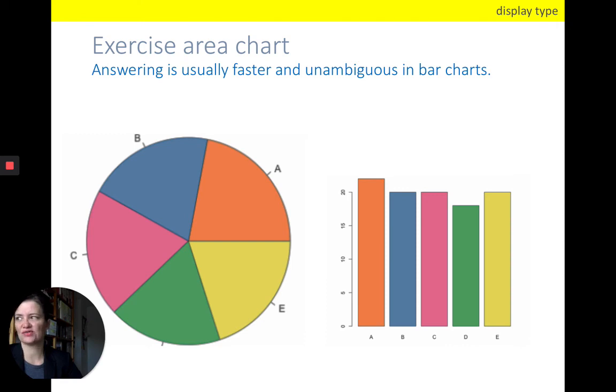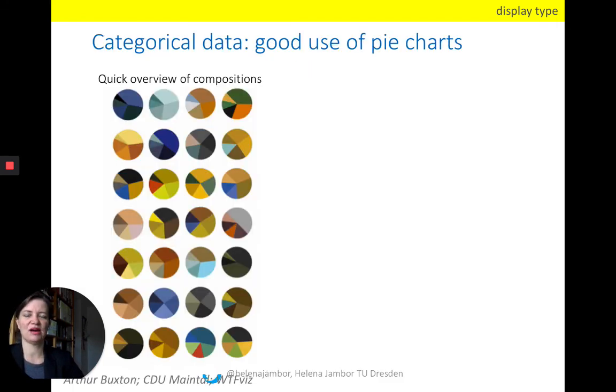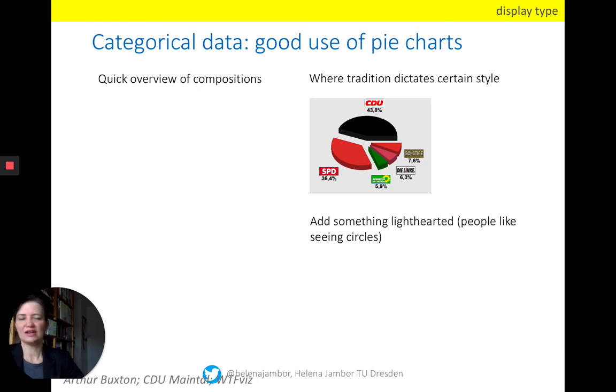A couple of instances when pie charts are working fine is, for example, one here. If you want to get a quick overview of a lot of different compositions, such as in this example, you can quickly get an idea of what is most common and predominant in which category. Also very often, pie charts are used when they are called upon by tradition. So in Germany, the election results are typically presented with a pie chart, and that really helps you to see the majority. Which two parties combined, or which three or four parties combined, could actually have a majority in parliament. For that, you always want to see which combination gives you more than half. So when tradition dictates to use a pie chart, try to go along with it.